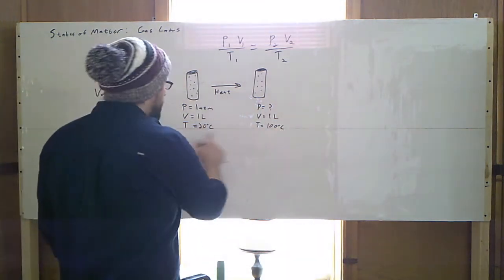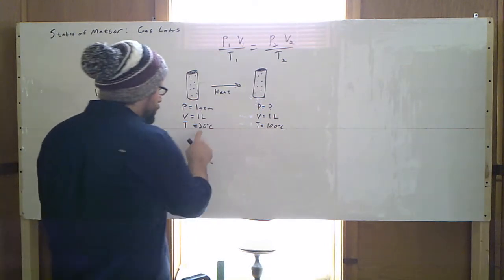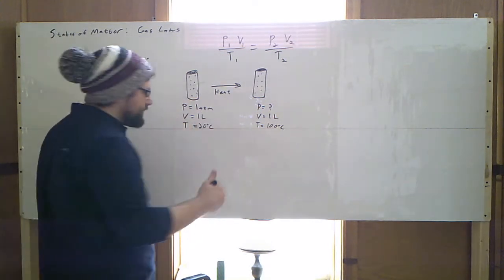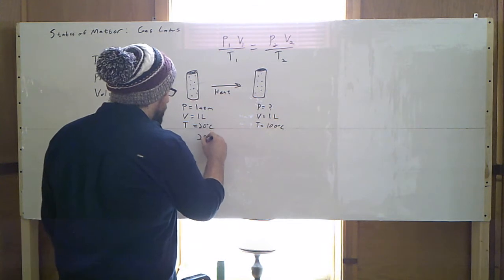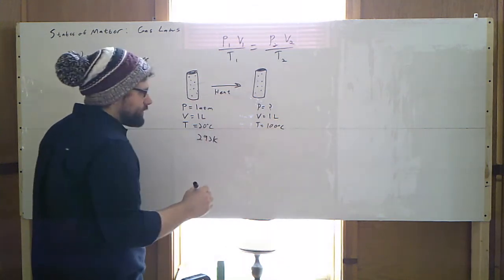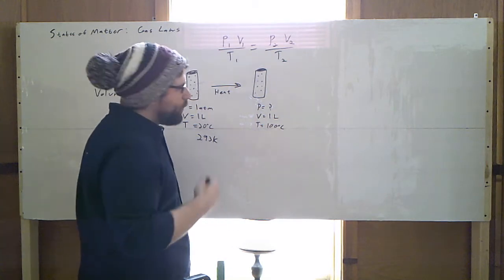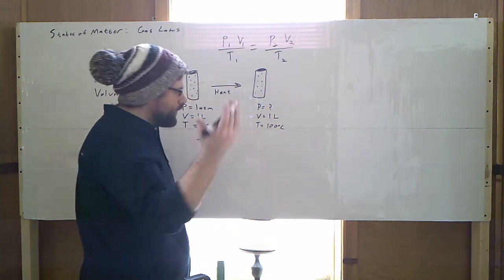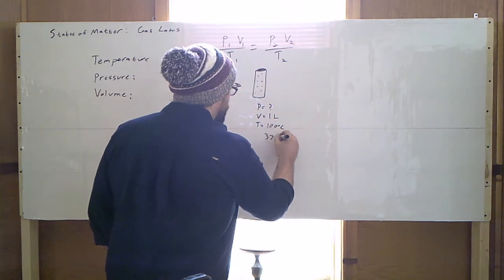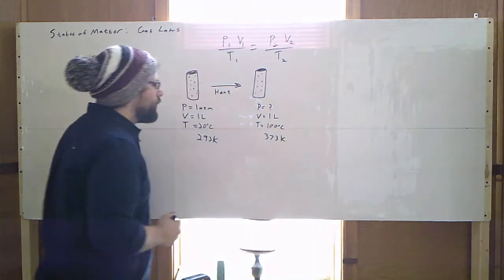So first we need to convert our temperatures into Kelvins. So 20 degrees Celsius, add 273, it's going to be 293 Kelvins. Our final temperature is 100 degrees Celsius. What is that in Kelvins? 273 plus 100, 373 Kelvins.